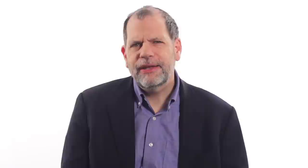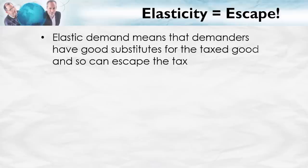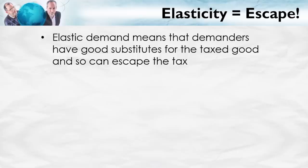Let's give some intuition. You can always get the right answer by drawing the curves. Think about elasticity as a kind of escape. The side of the market which is more elastic can escape the tax more easily. Remember what elastic demand means: demanders have good substitutes for the taxed good, so they can escape the tax — when the tax is high, the demanders will just go buy the substitutes. On the other hand, when demand is inelastic, there are no good substitutes, so it's hard to escape the tax.